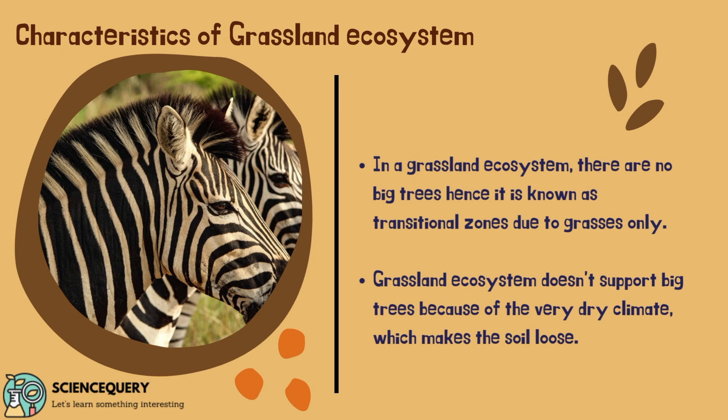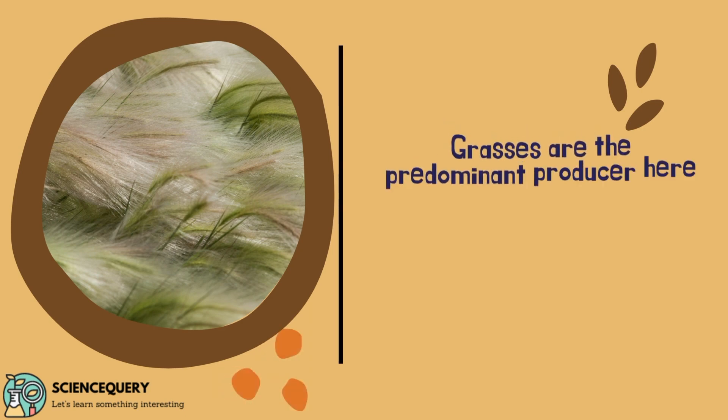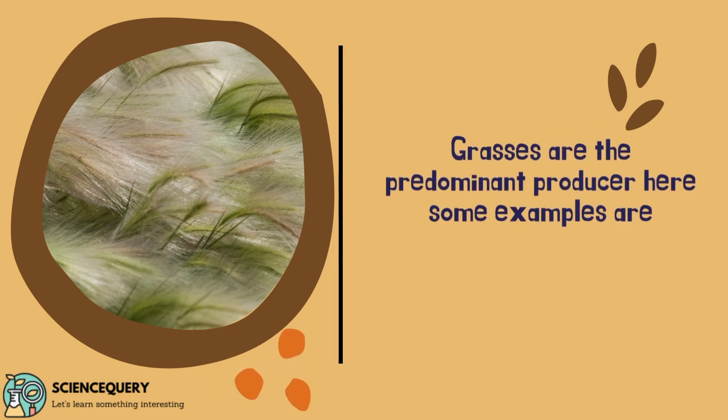There are no big trees in the grassland ecosystem, hence this type of ecosystem is known as a transitional zone. As the name suggests, it is a transition halfway between the desert and the forest ecosystem. Grassland ecosystem doesn't support big trees because of the very dry climate, which makes the soil loose. Therefore, in the grassland ecosystem, grasses are the predominant producer.